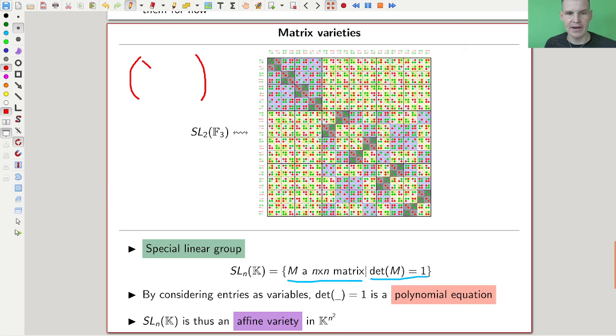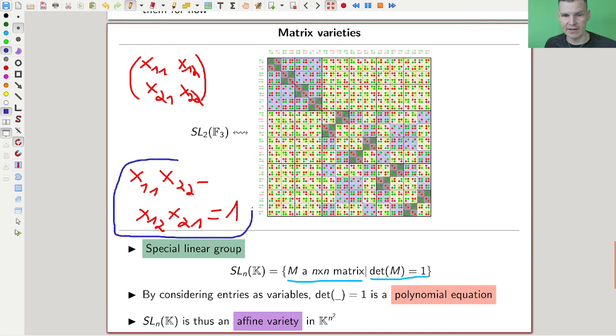n by n matrices with determinant one form an affine variety. They're very different from the examples like the conic sections, but they still do. How do you see that? Let me do the two by two case. I have a two by two matrix, but I can consider the entries as variables. The determinant of this guy would be x₁₁x₂₂ - x₁₂x₂₁ = 1, and that's a polynomial equation in four variables.